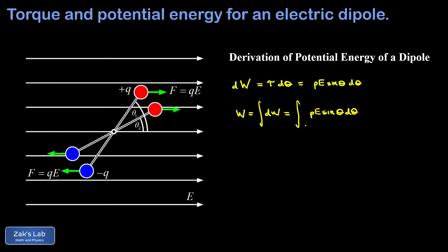There's a tricky sign issue here: theta is actually decreasing as the dipole rotates toward alignment, so dθ is negative — this is a backwards integral. We recognize that the electric field is doing positive work over each small increment of angle, so we place a minus sign out front to correct the sign and ensure the result is positive as expected.